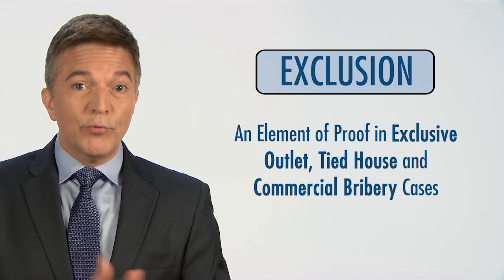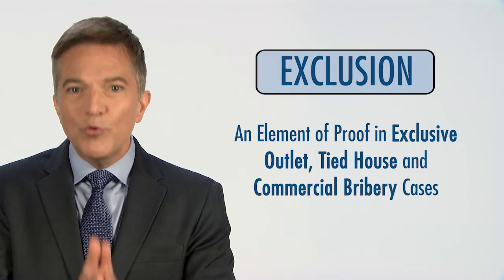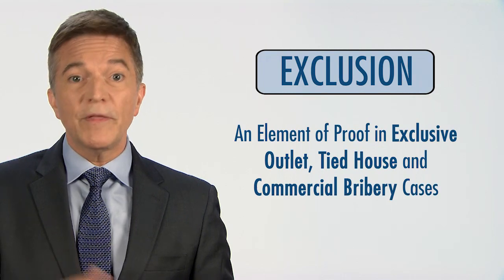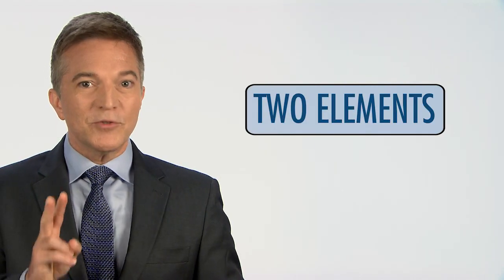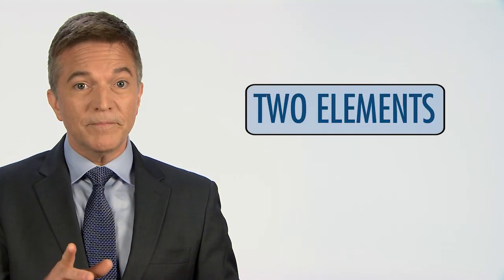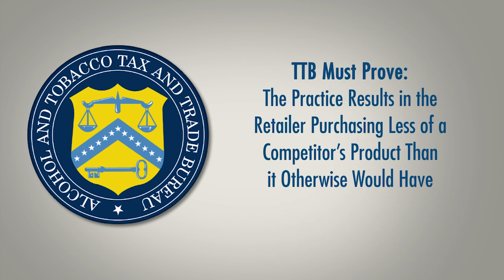Exclusion is an element of proof in exclusive outlet, tied house, and commercial bribery cases. In order to prove a violation, TTB must show that the prohibited practice resulted in the exclusion of competing products. There are two elements to exclusion, both of which must be proven. First, TTB must prove that the practice places or has the potential to place a retailer's independence at risk by means of a tie or link between the industry member and the retailer, or by any other means of industry member control. Second, TTB must prove that the practice results in the retailer purchasing less of a competitor's product than it otherwise would have.